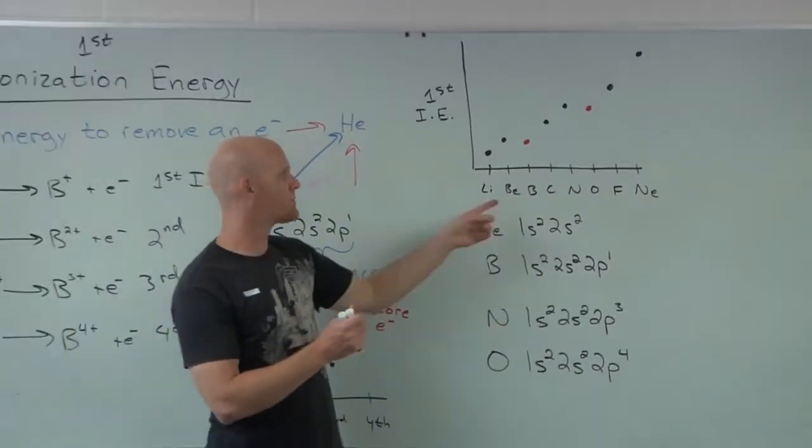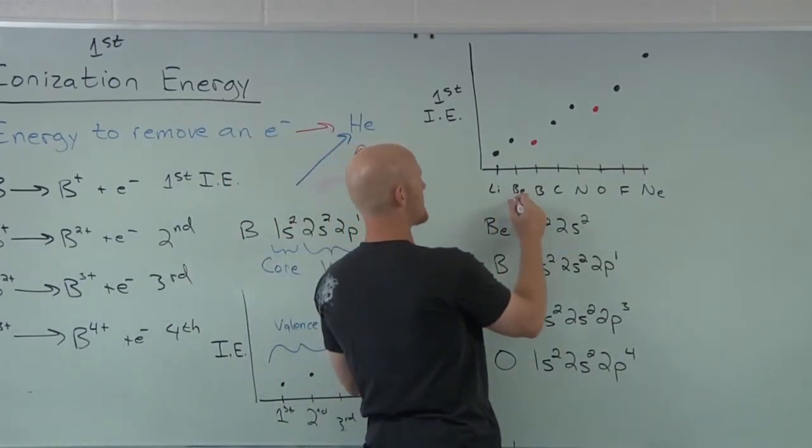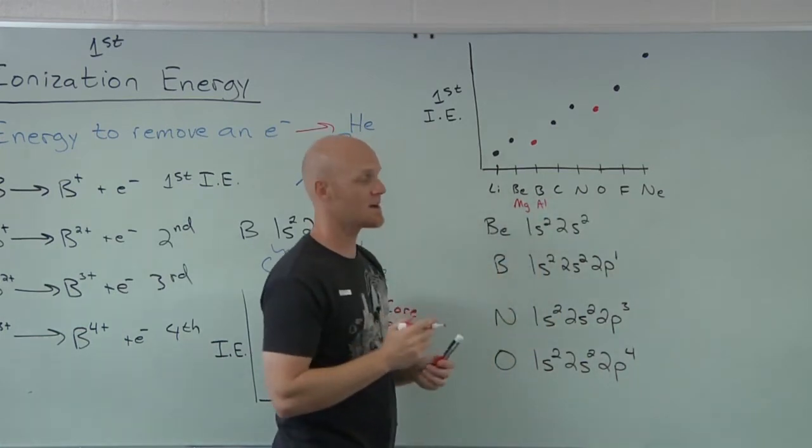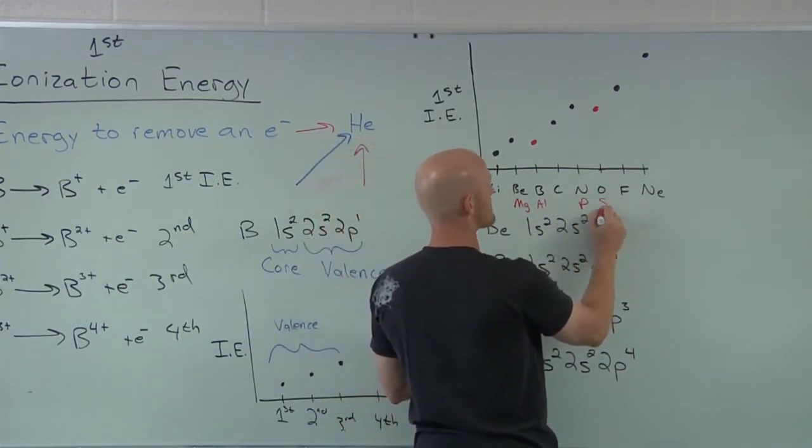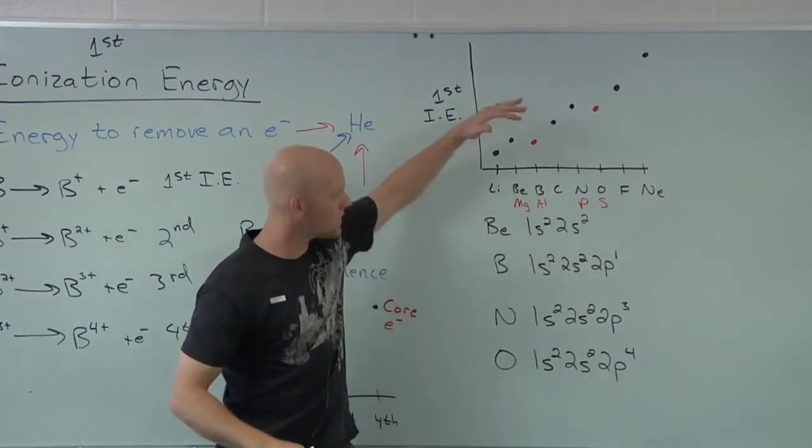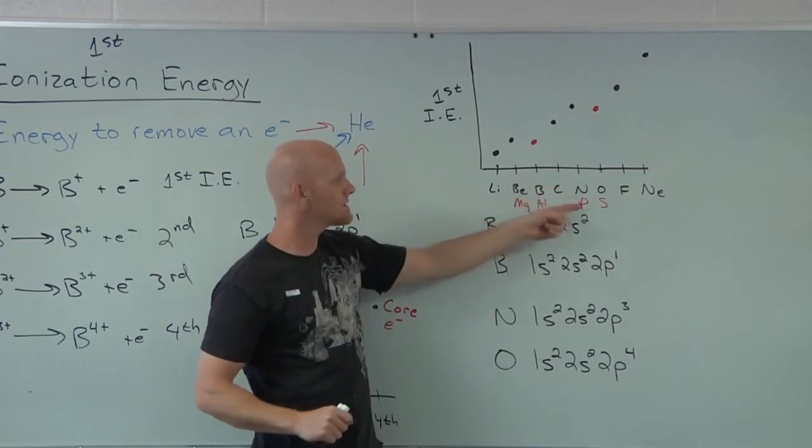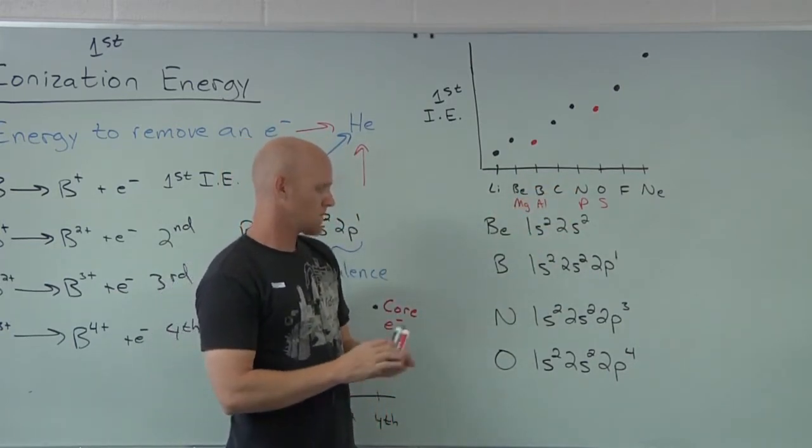It's not just beryllium and boron. If you go down to the next row and you actually compared like magnesium and aluminum, you'd find it continues on there. Same thing, nitrogen and oxygen. If you compared phosphorus and sulfur, you'd find out phosphorus is also higher than sulfur. It doesn't go all the way down the periodic table, but at least goes down a couple of rows.